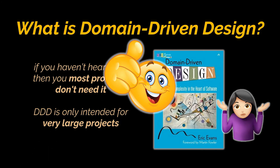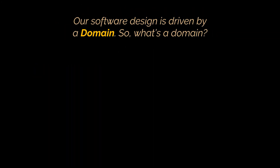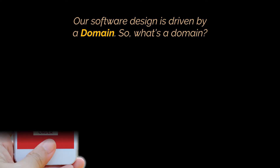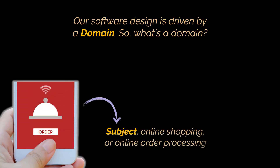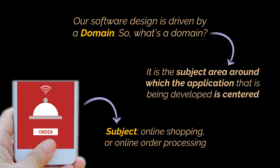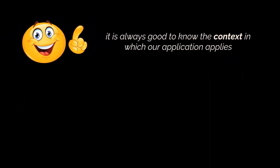Let's start by breaking the words down. DDD means that our software design is driven by what we call a domain. What's a domain exactly? Say we are developing an application that allows us to order stuff — the subject of our application will be online shopping or online order processing. That subject area around which the application being developed is centered is called the domain. It is always good to know the context in which our application applies.